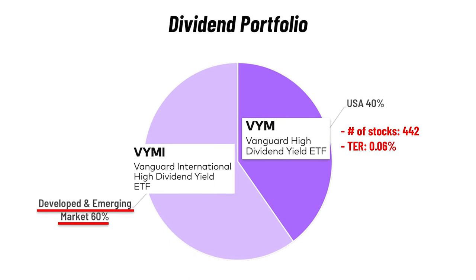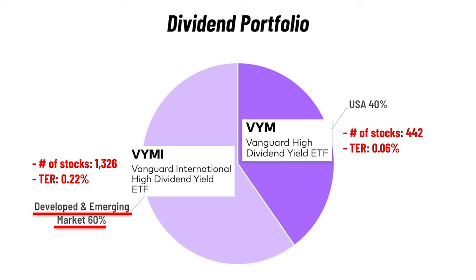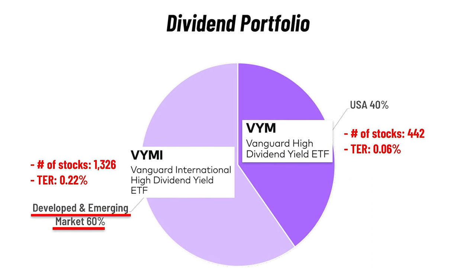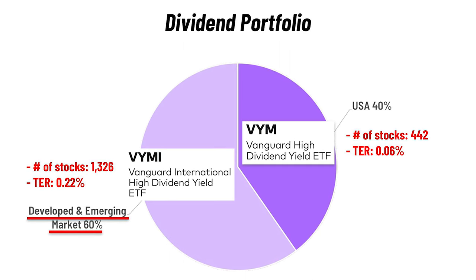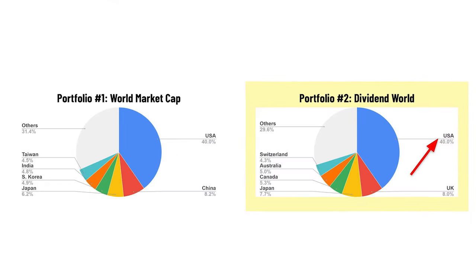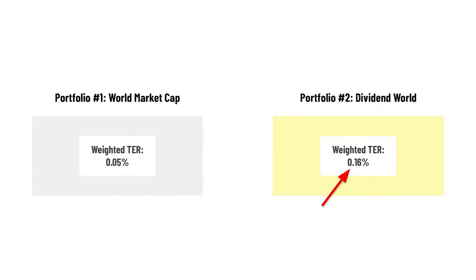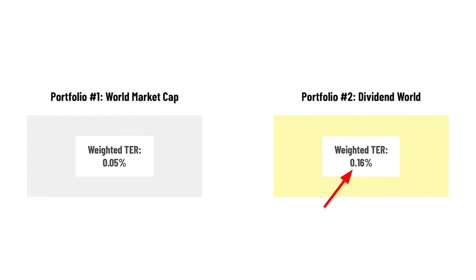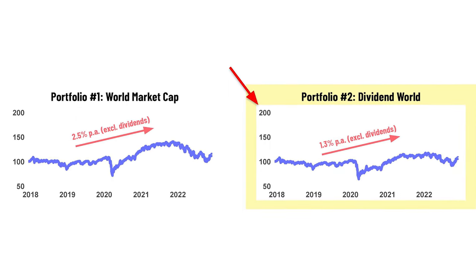One option for an international dividend ETF would be Vanguard's International High Dividend Yield ETF, ticker symbol VYMI. This gives you exposure to ex-US international stocks with above-average dividend yields — 1,300 companies from 44 countries — with an expense ratio of 0.22%. Investing 40% in VYM and 60% in VYMI gives you 1,700 companies from 45 countries, with 40% in the US, 8% in the UK, and 7% in Japan. The weighted expense ratio is 0.16%, and over the last five years the portfolio returned 1.3% per year excluding dividends. Check out the dedicated dividend ETF video for more.